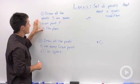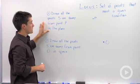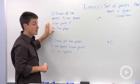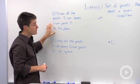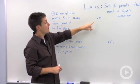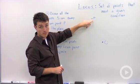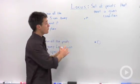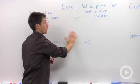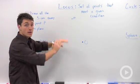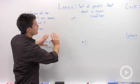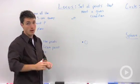The first one says draw all the points five centimeters away from point P in the plane. So here's point P. The plane would be the plane of the board. Remember, planes are two-dimensional, and they extend infinitely in every direction.